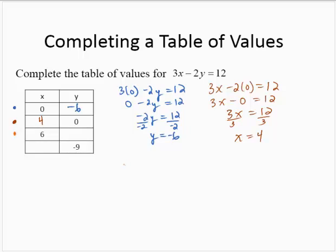And what if x is 6? 3 times 6 minus 2y equals 12. 18 minus 2y is 12. And this is a little tougher. However, let's subtract the 18 from both sides. And negative 2y is negative 6. Dividing through by the negative 2, y equals 3.